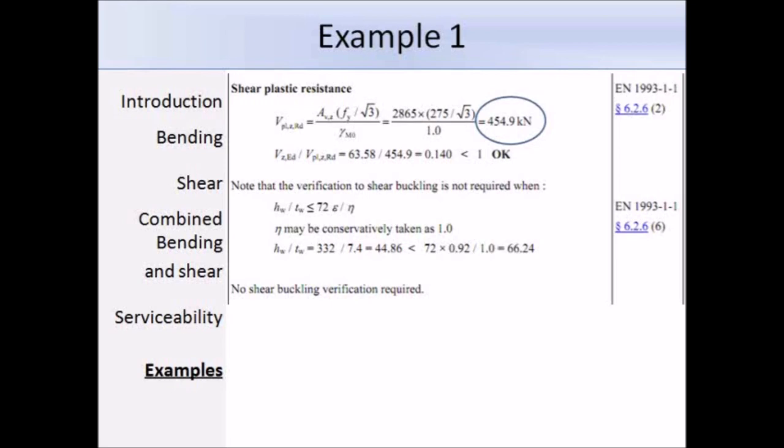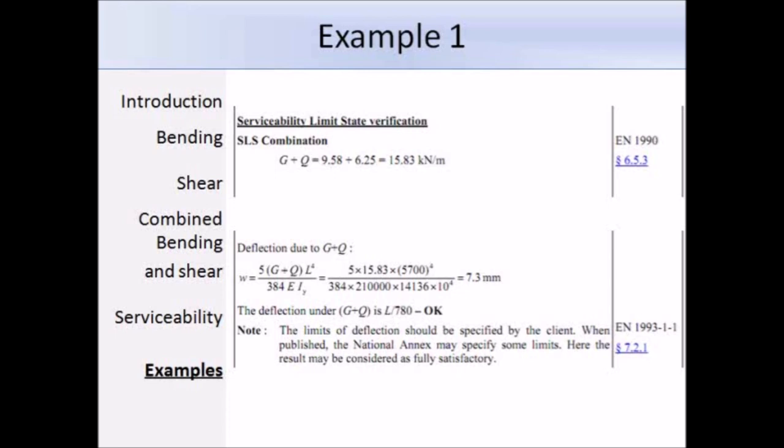The section is okay for bending and shear. The last thing that we need to check is the deflection. Here we need to use unfactored load. The serviceability limit state combination is given at the top there, and we get 15.83 kN per meter. To work out the deflection, we use this equation: 5 times unfactored load times the length to the power of 4, all over 384 times EI. That works out as 7.3 millimeters. Now, we need to compare this to the allowable deflection. Here, the limit is the length over 780, and our actual deflection is well below that. Therefore, the beam is suitable against bending, shear, and deflection, and therefore it can be adopted.